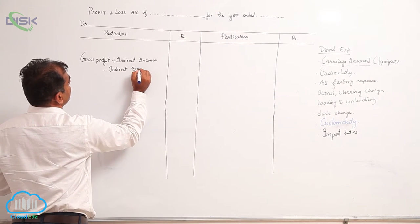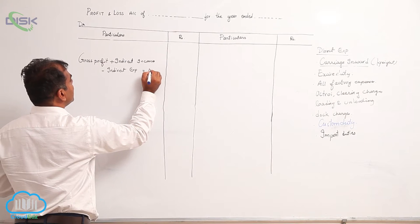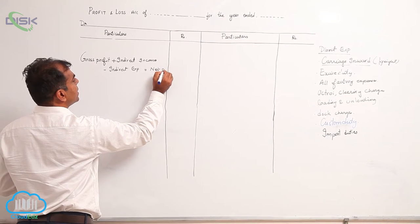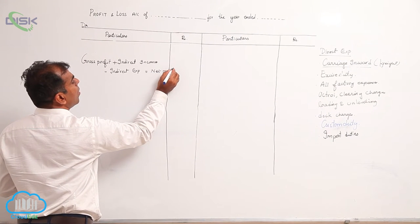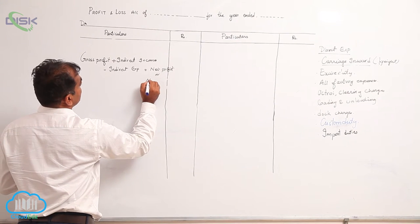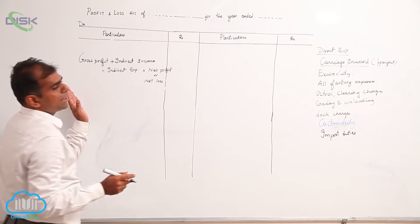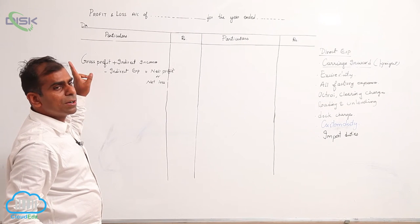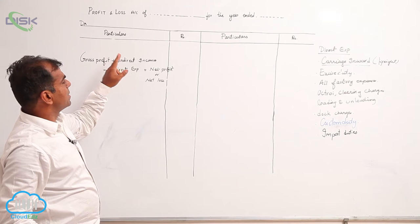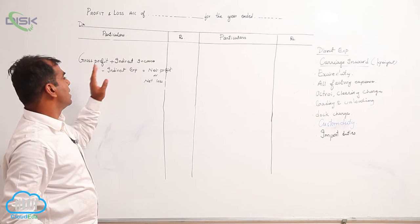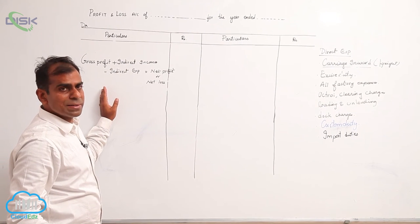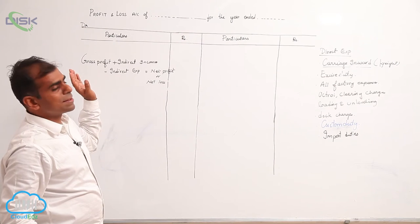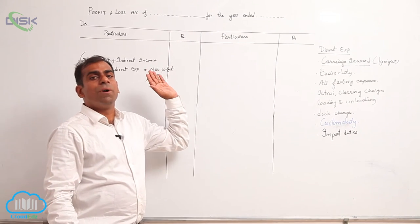Minus indirect expenses. Now this will give you either a net profit or net loss. So P&L account is nothing but a comparison between your gross profit plus indirect incomes minus indirect expenses.